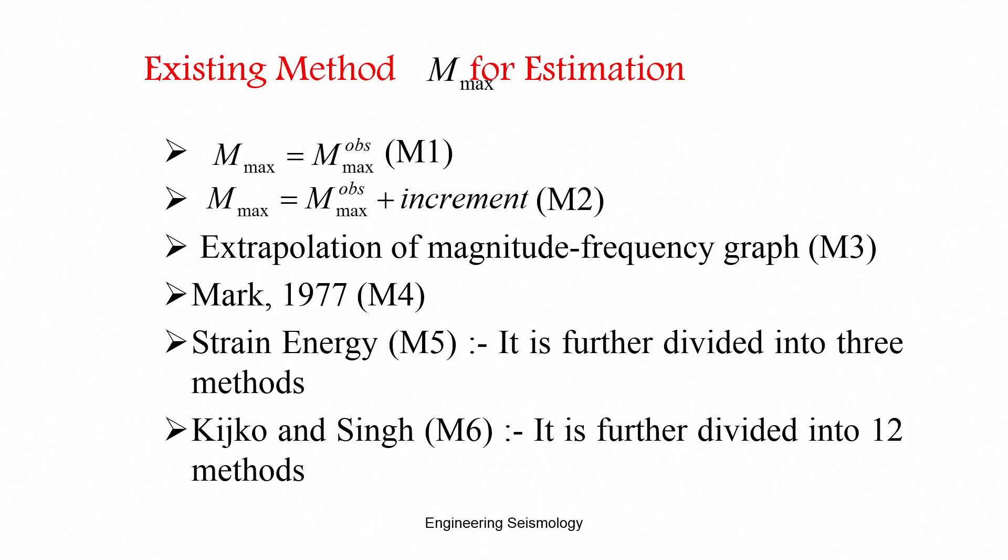There are several methods used to estimate Mmax. Method 1 is taking the maximum observed magnitude in the region as Mmax. However, if you have a very short catalogue, this will lead to a very low Mmax value for future design.